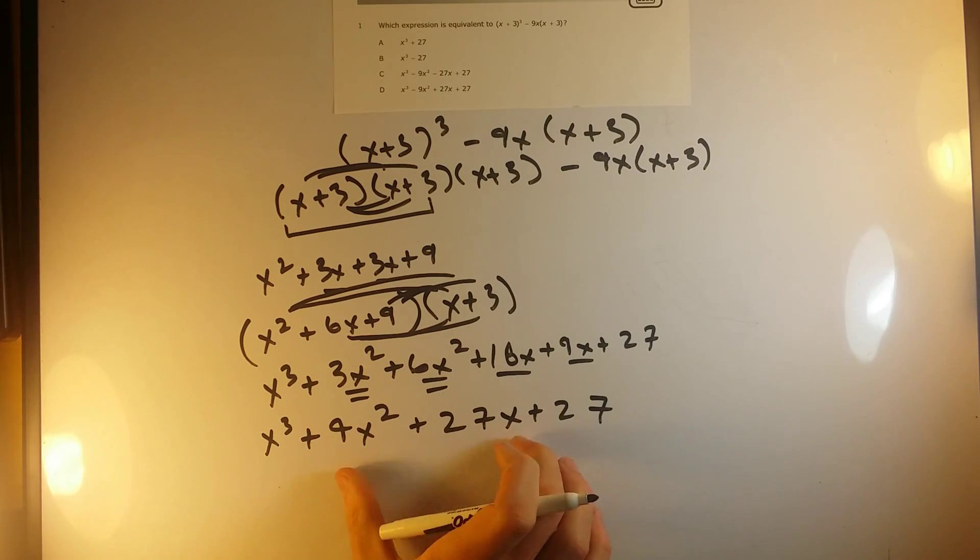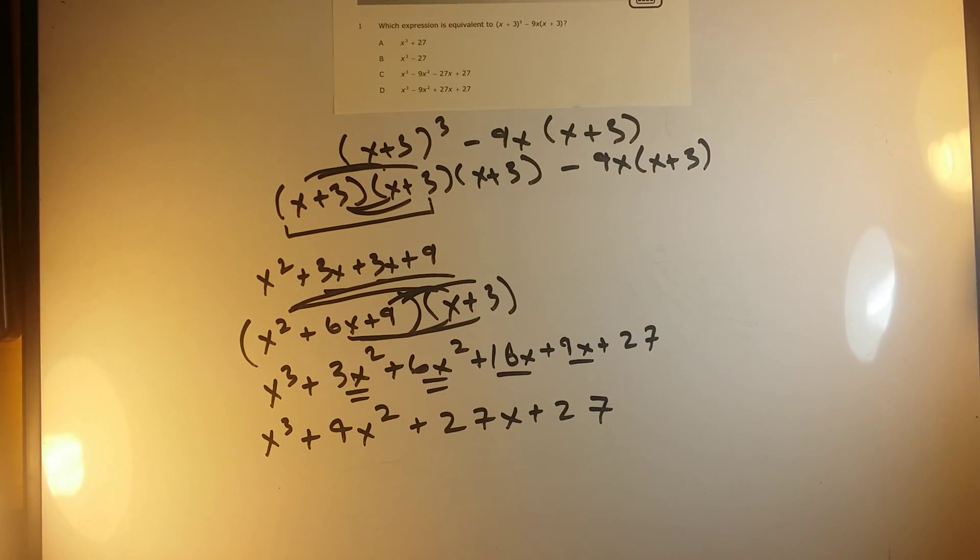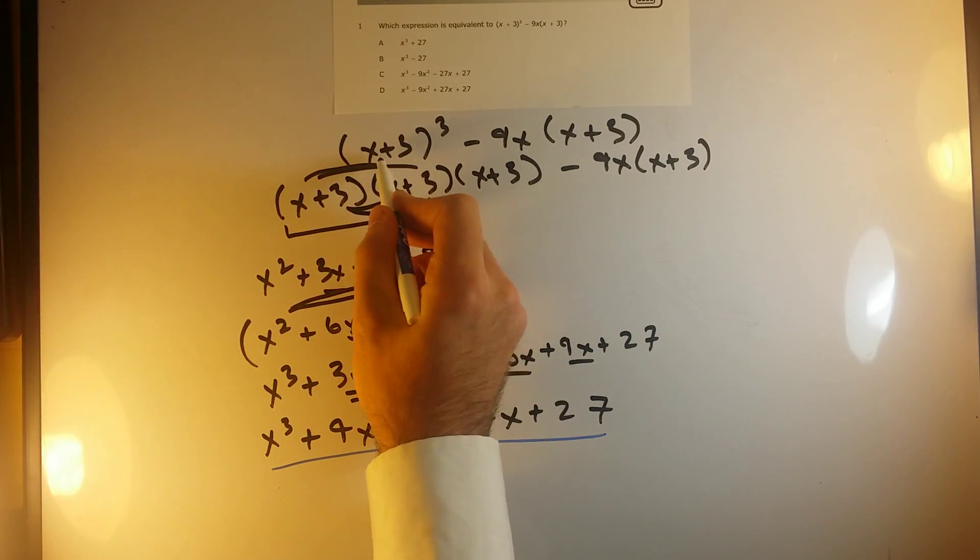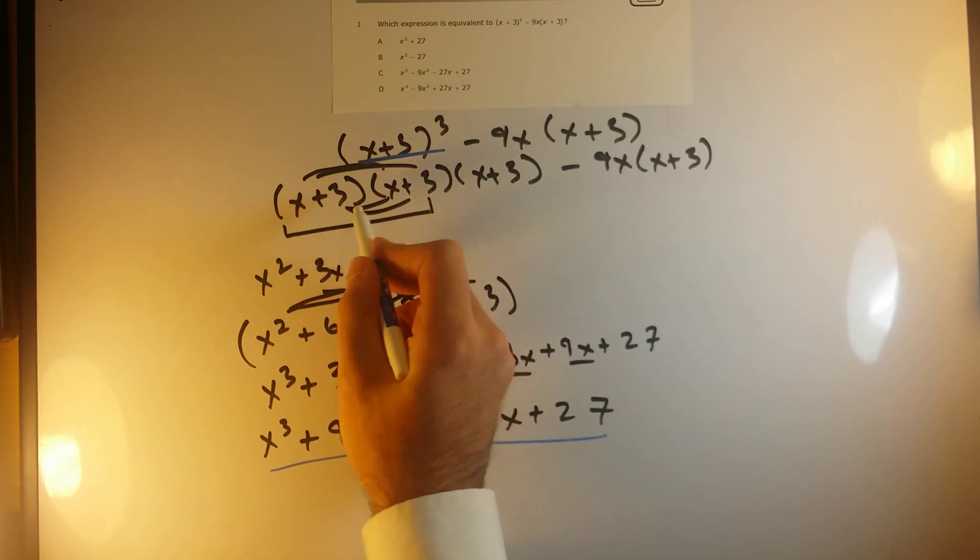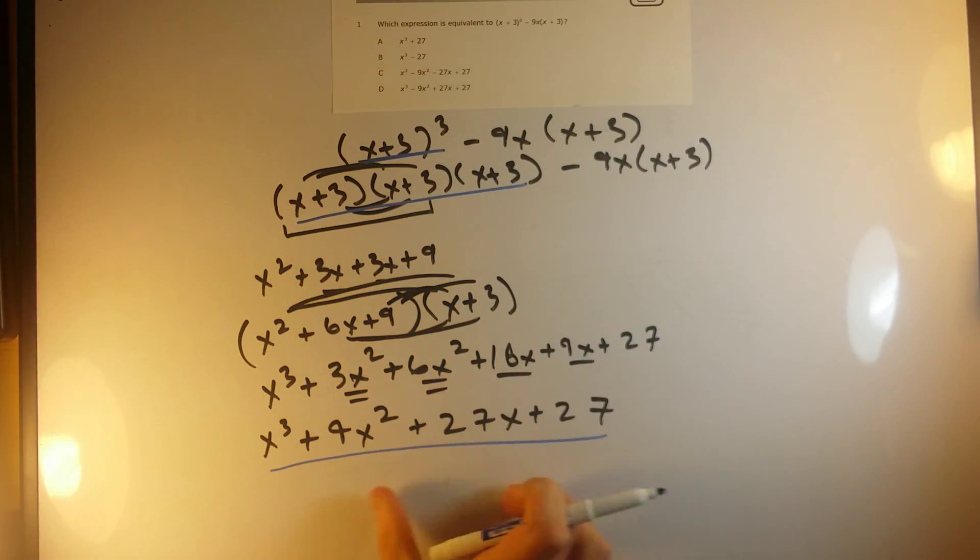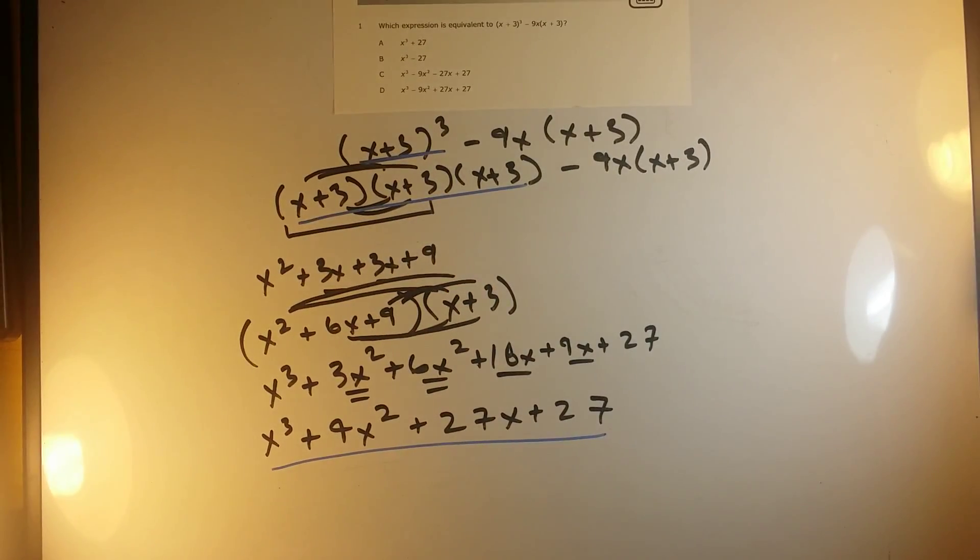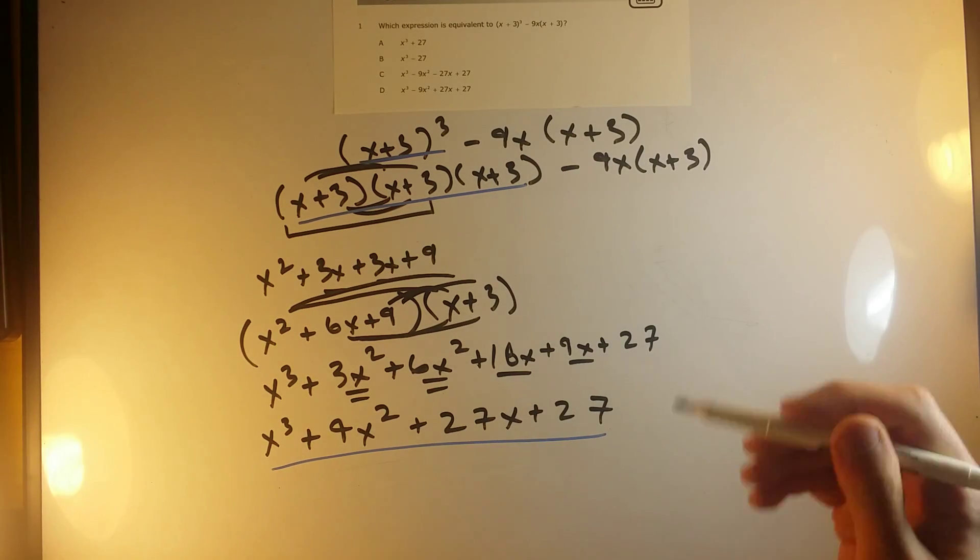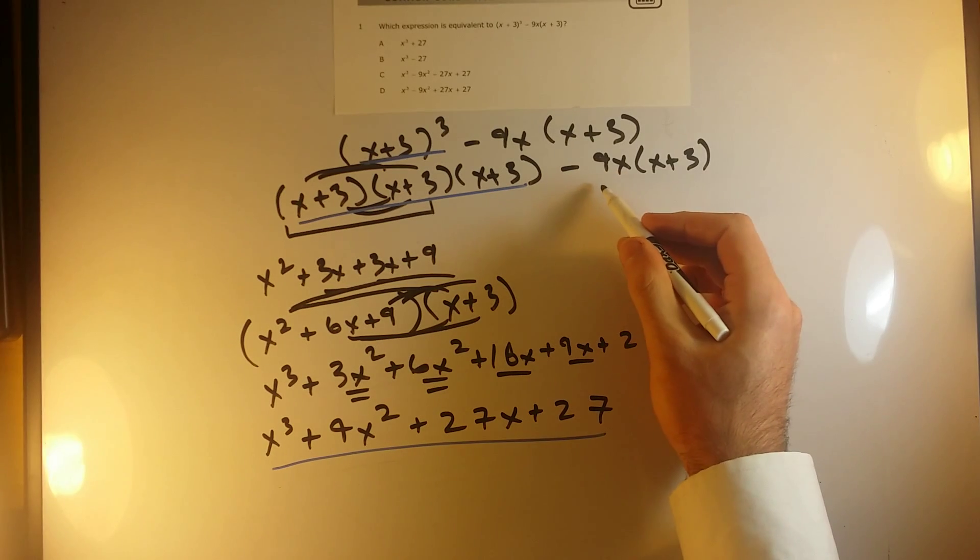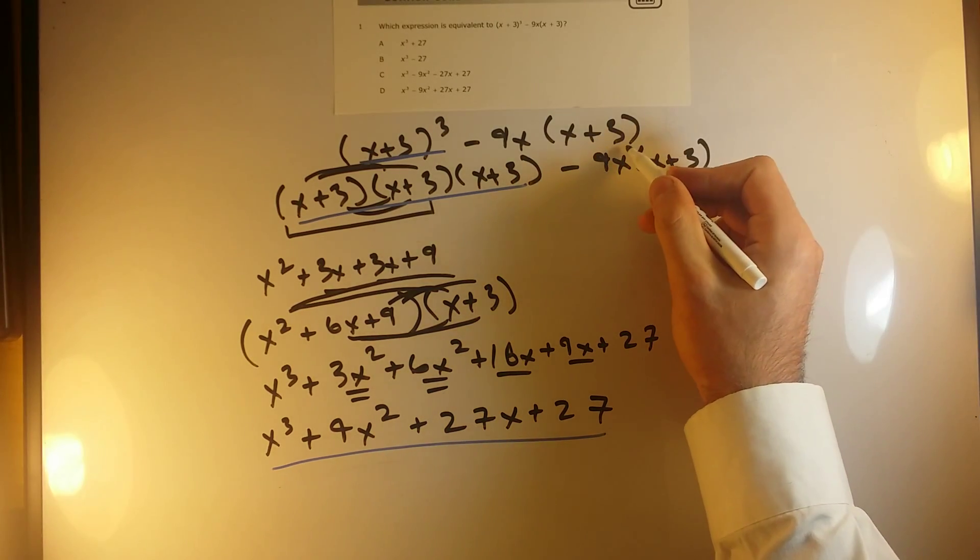Okay, so this whole expression, I'll underline this in blue, was just my x plus 3 cubed. I just simplified this to get me this expression. Now, I will just distribute this other part of the expression. I've got minus 9x times x plus 3.